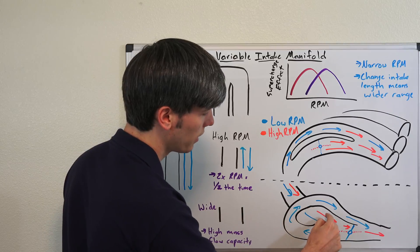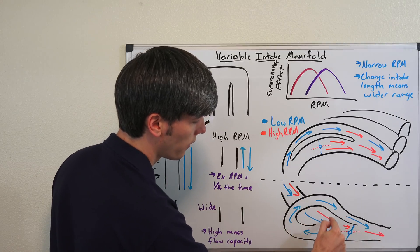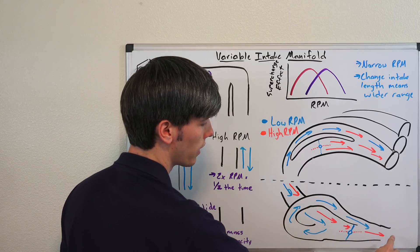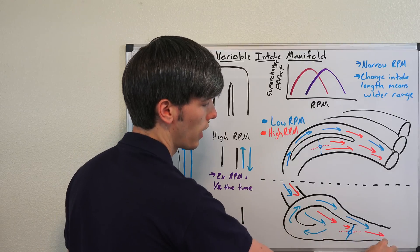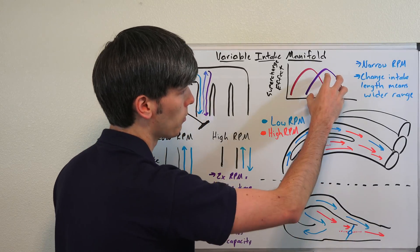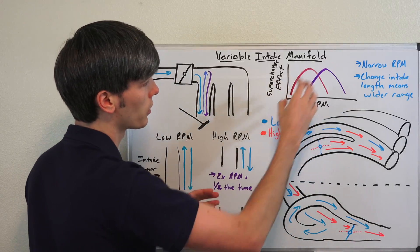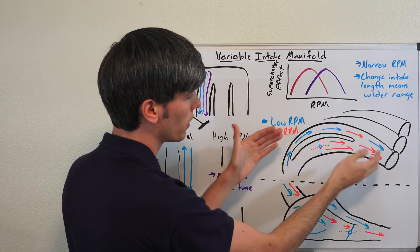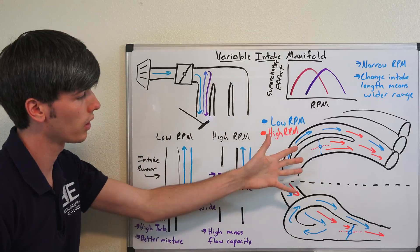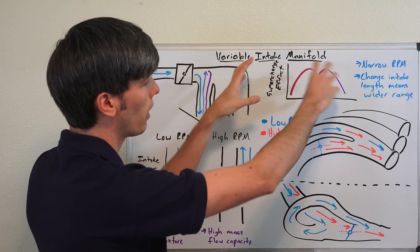You can have the air come in at low RPM, it'll be closed off and has to travel back all the way around before it can get into the engine. Or at a high RPM it can just go this really short shot right here and get in, so that'll give you that more effective high supercharging effect at a higher RPM versus something like this. But this one, you're going to change your flow characteristics. So both of them going to give you a benefit of a wider power band.